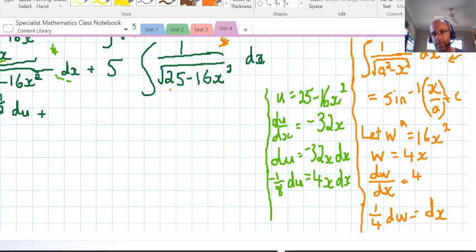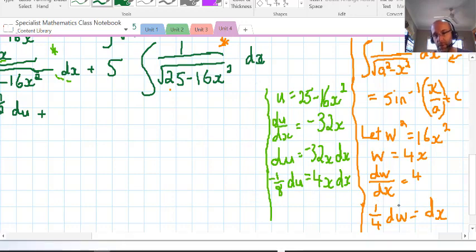So let's put all that back into the main question. We've got dx needs to be replaced by a quarter dw. Down the bottom there, and we've got a 5 sitting at the front, so we'll actually have five quarters there.